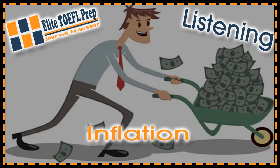Questions 6 through 10. Listen to a talk given by an economics instructor. One of the major problems in our economy is inflation, a situation in which prices are going up faster than wages. Thus, a person has to work more hours to pay for the same items. For example, let's say that this year a loaf of bread costs $1, and the average salary in the United States is $10 per hour. That means a person could earn enough money to buy a loaf of bread in 1 tenth of an hour, or 6 minutes.